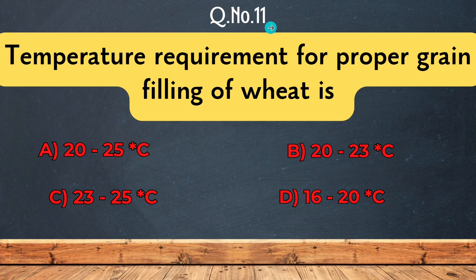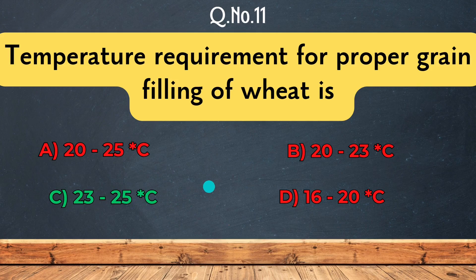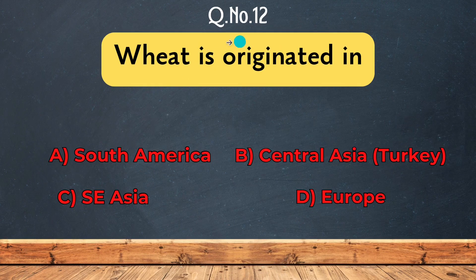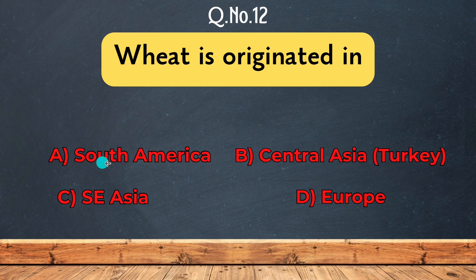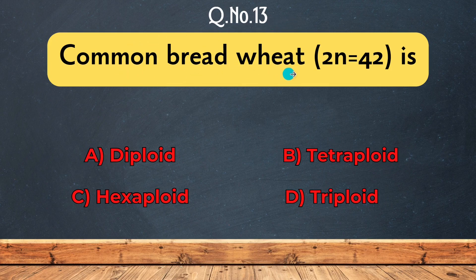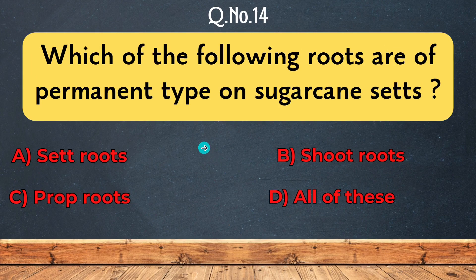Question 11: Temperature requirement for proper grain filling of wheat is — 20 to 25 degrees centigrade, 23 degrees centigrade, 16 to 20 degrees centigrade, or 23 to 25 degrees centigrade. The correct answer is 23 to 25 degrees centigrade. Question 12/13: The origin of wheat is Central Asia (Turkey). The correct answer is Option B, Central Asia Turkey.